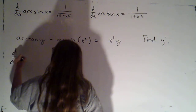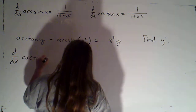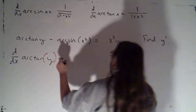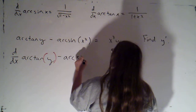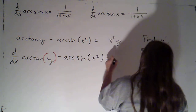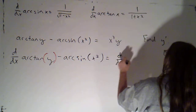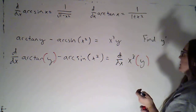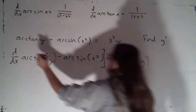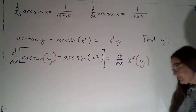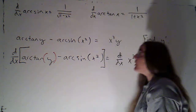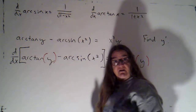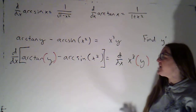So we will take the derivative of arc tan of y — I like to put that in parentheses to emphasize that it's representing a function of x — minus arc sine of x squared, equal to the derivative with respect to x of x cubed times y, where again that's a function of x. On the left side I should have this in brackets because I'm taking the derivative of the whole thing. For this first piece I'm taking the derivative with respect to x but it's a function of y, so I know that's a function composition — that's going to be chain rule.